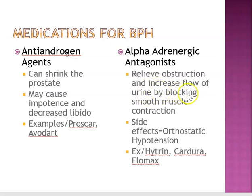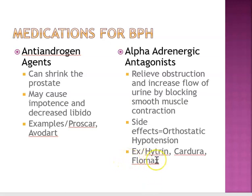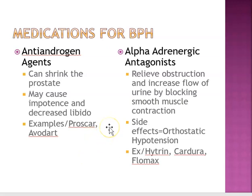Alpha-androgenic antagonists relieve obstruction and increase urine flow by blocking smooth muscle contraction. Side effects include orthostatic hypotension. Examples are Cardura and Flomax — the generic name for Flomax is Tamsulosin. If the condition is mild, they'll start with Proscar or Avodart, and combining Proscar with Cardura together will be more effective than a single agent — keep that in mind if the patient's manifestations tend to progress over time.